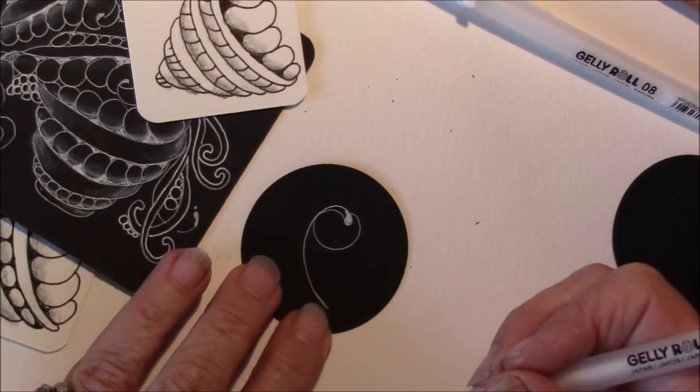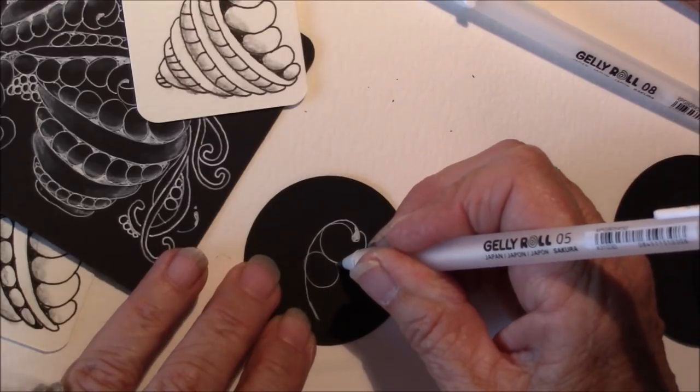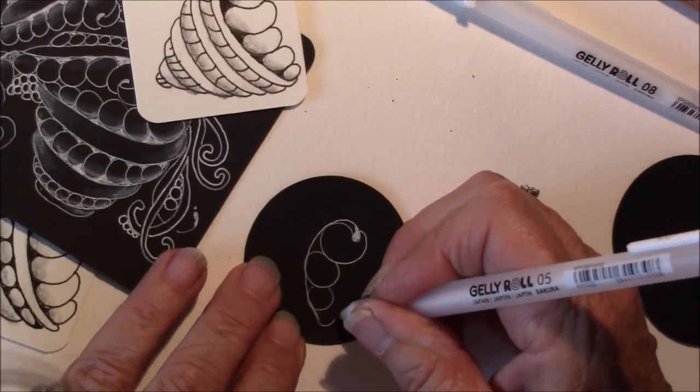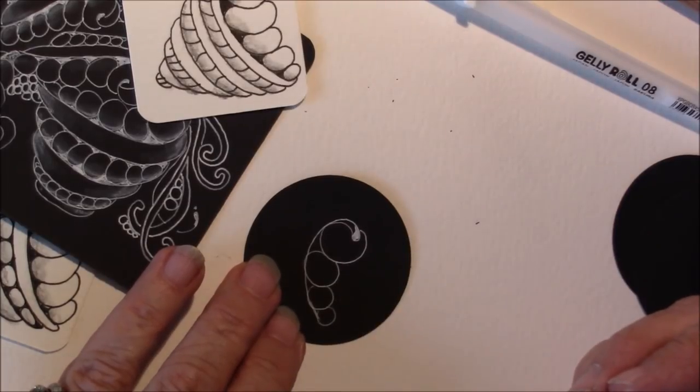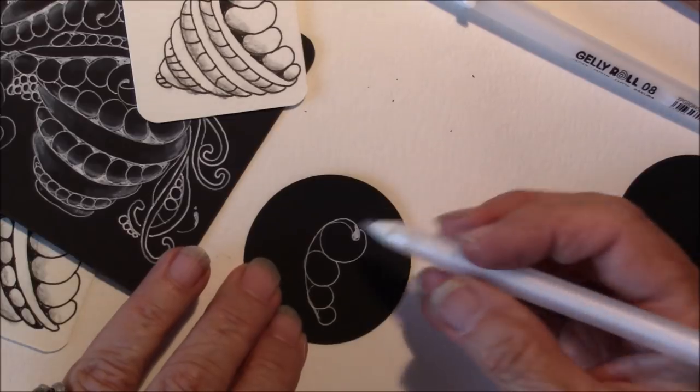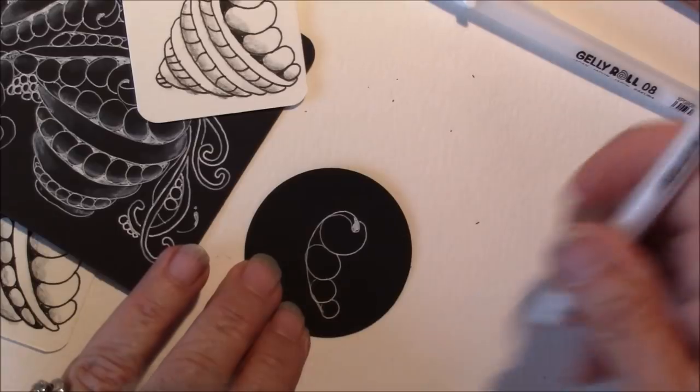Then we're going to do a little ball that comes around like that, and another one, another one, and I think I can get four, and they kind of just nestle into each other, so they're like orbs or little round peas that are stuck close together.